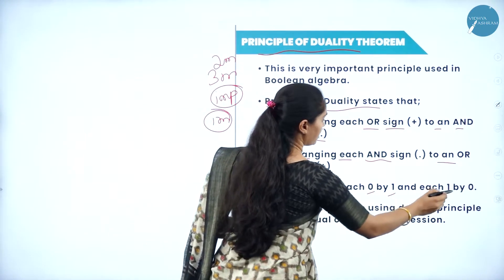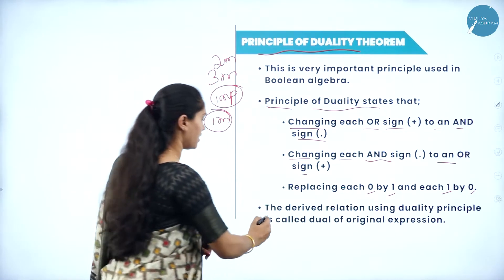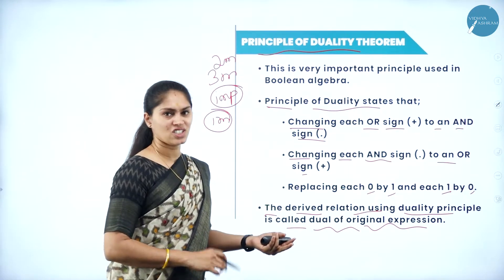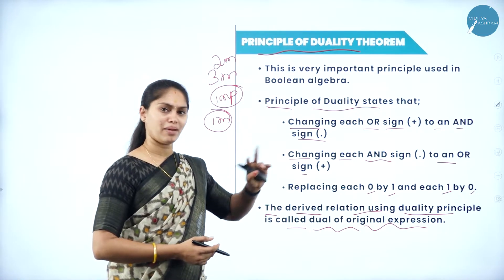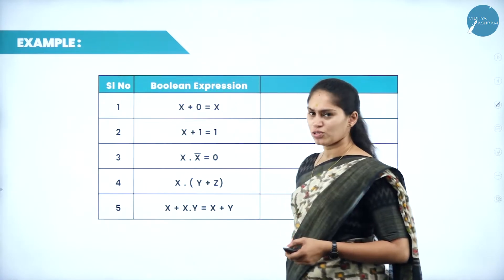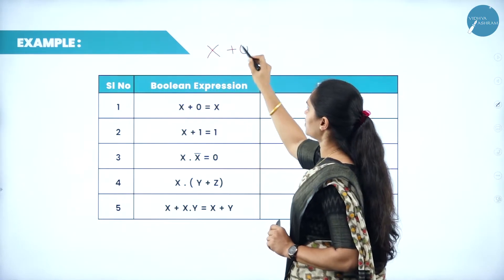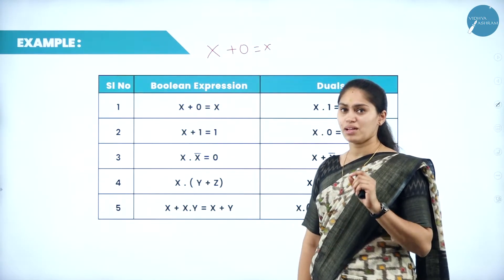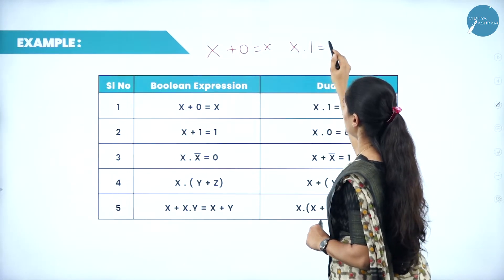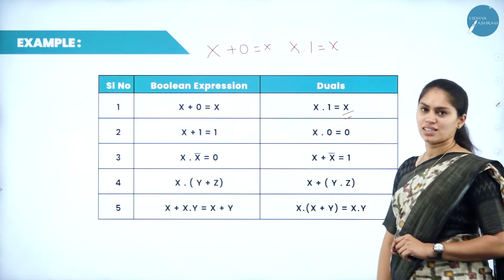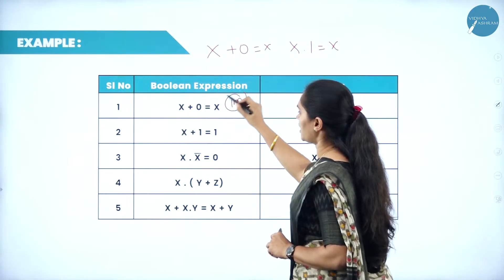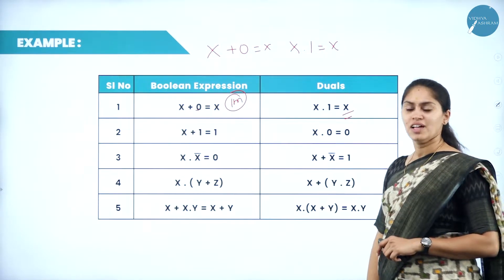Here are some examples of the duality principle. Take x plus 0 equals x. All 0s are converted to 1, all plus symbols are converted to product, and the variable remains as it is. So the dual output is x dot 1 equals x. You can take a screenshot of this. Questions like 'write the dual of x plus 0 equals x' can also be expected from this slide. This is the principle of duality.